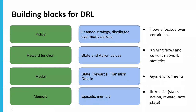Deep reinforcement learning is a very powerful building approach with four different spaces: memory, model, reward function, and policies it learns. For networks, memory is a linked list of the current state, the action taken, and the reward received. The gym environments represent the model of the network. State and action values represent the reward functions. And the policy allows you to learn that rather than doing an action now, you can do an action that will give a good result ten steps later — learning longer-term policies for the network.